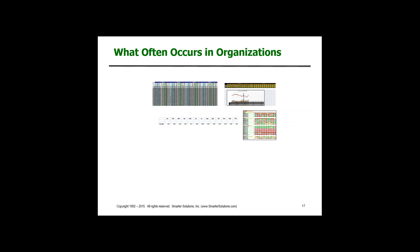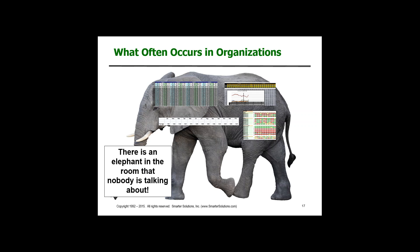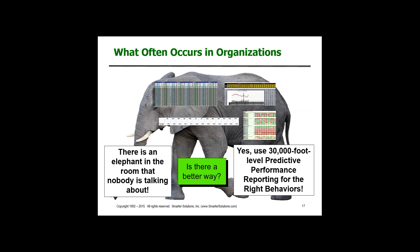I often have four different scorecards that I ask people how they would interpret. In every case, they give me option five, which says 'I cannot make any sense from them.' So I believe we have an elephant in the room that nobody is talking about. The question is: is there a better way of having scorecards? And I'm suggesting there is — and that's 30,000-foot-level reporting.